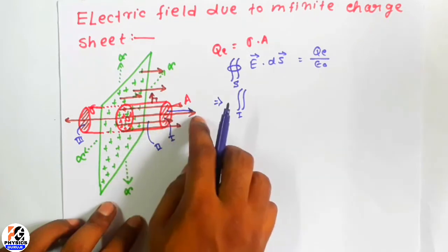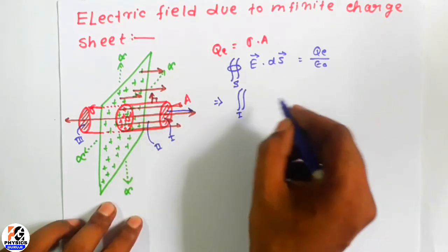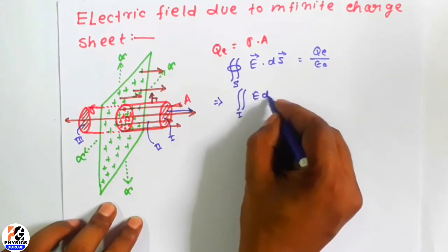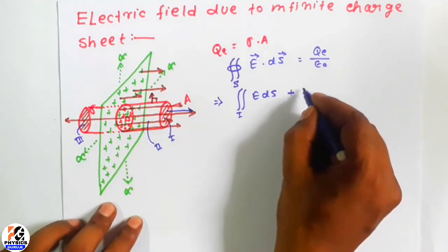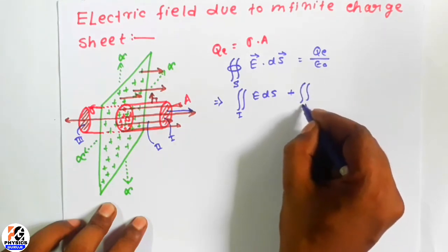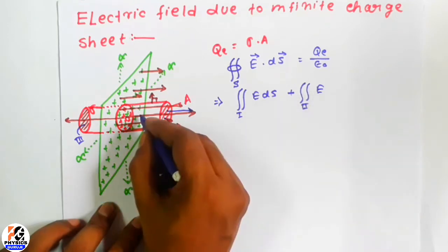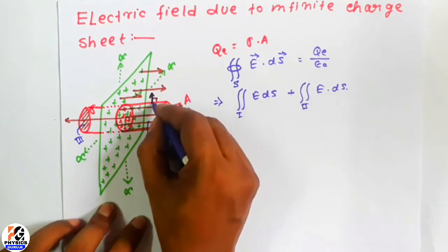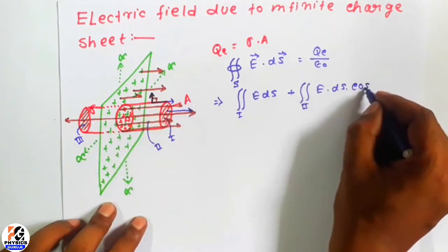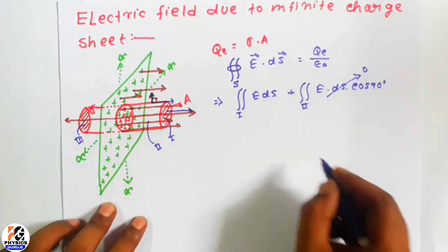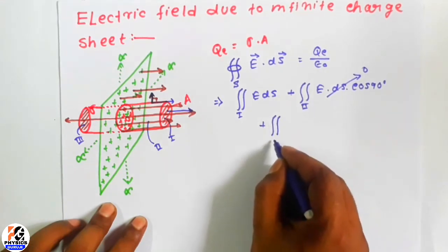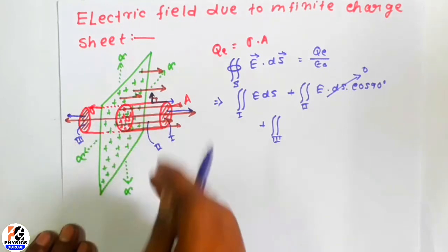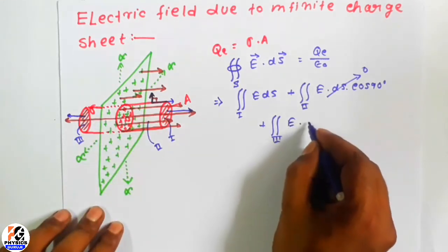Here E and dS are both parallel — the direction of dS is perpendicular to the surface and the direction of the electric field is also perpendicular to the surface. So the dot product becomes E into dS into cos theta, which gives E into dS times cos zero degrees equal to E·dS. For the second surface, E and dS make a 90 degree angle because the field is perpendicular to the surface normal, so it becomes cos 90 which equals zero. For the third surface, the electric field points in the left direction and the normal to the surface also points in the left direction, so it is equal to E into dS.